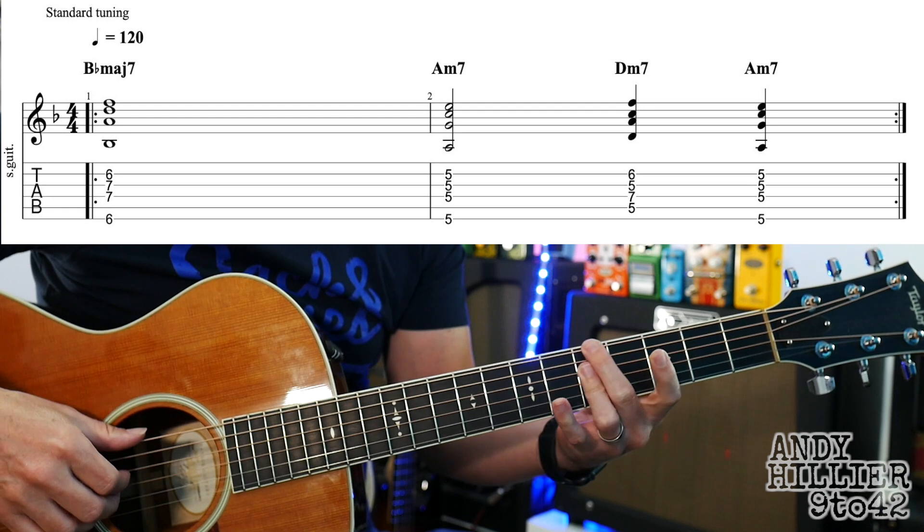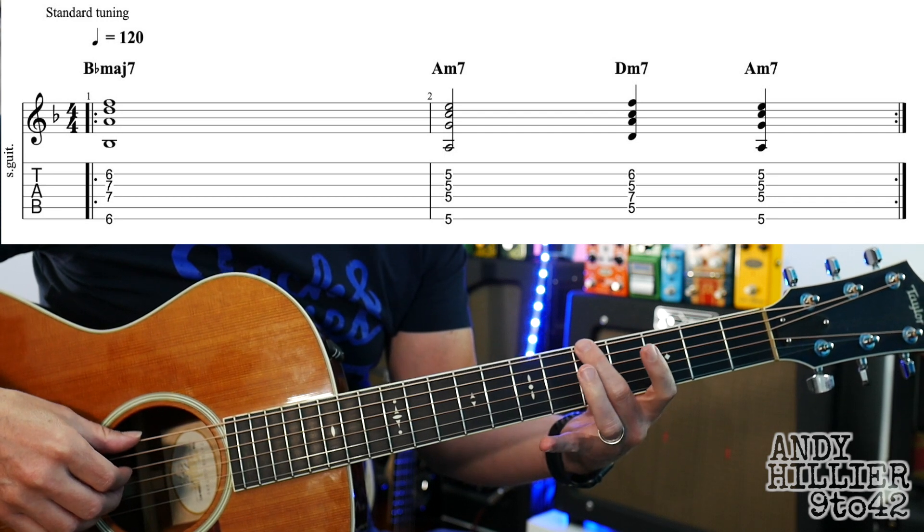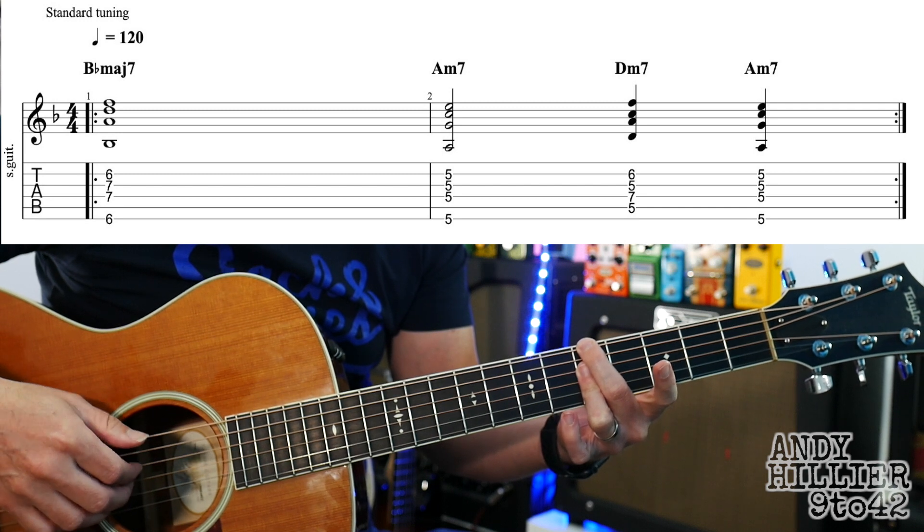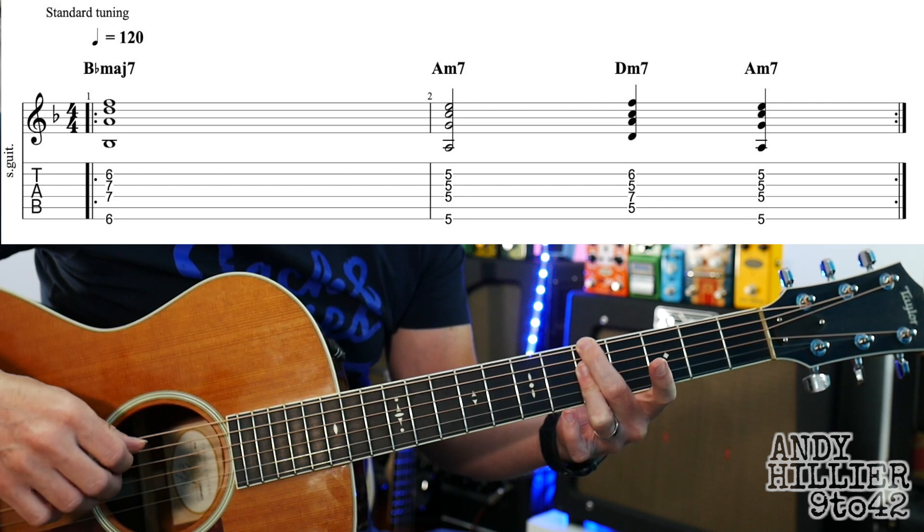Okay, second chord is Am7, which you put your second finger on the E string nearest to your face, third finger across D, G and the B strings, and we're going to play those.